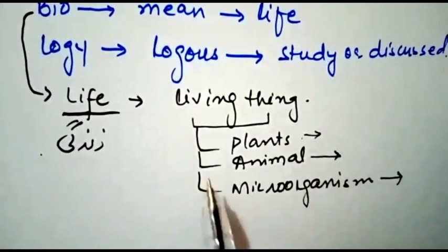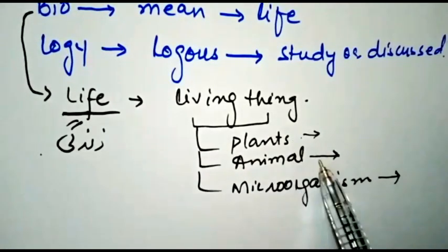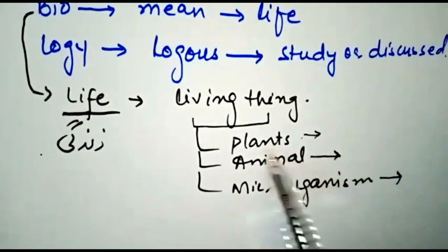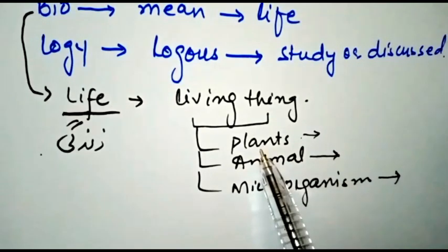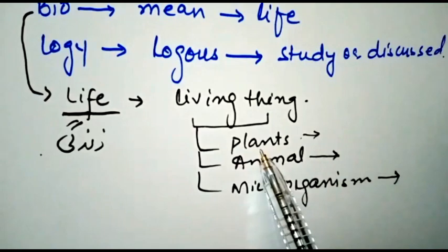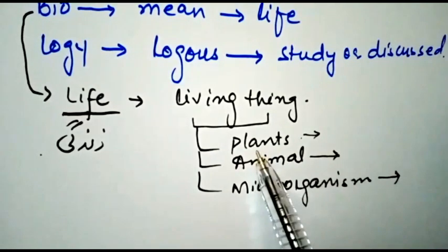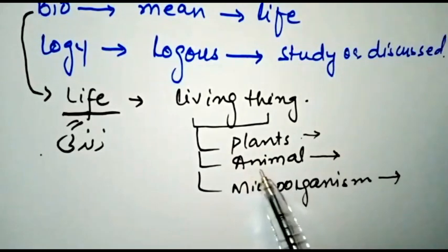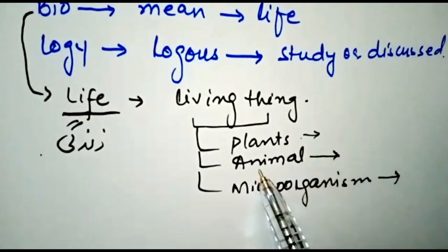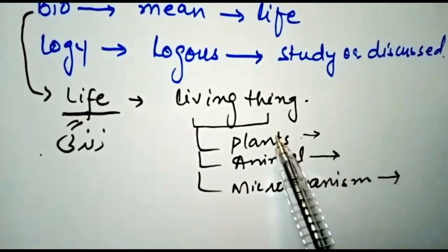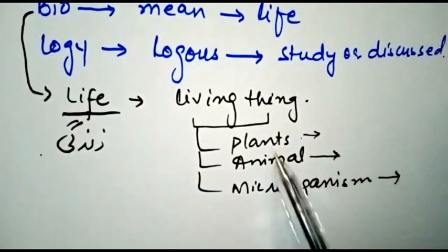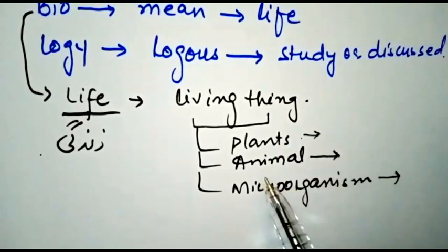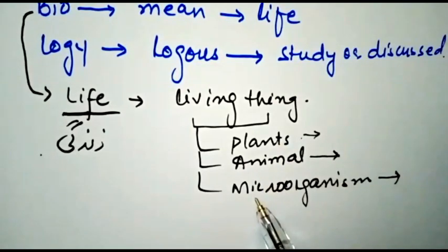Life is divided into three main categories: plants, animals, and microorganisms. Plants are autotrophs, meaning they prepare their own food. Animals, including humans, cannot prepare their own food and depend upon plants.